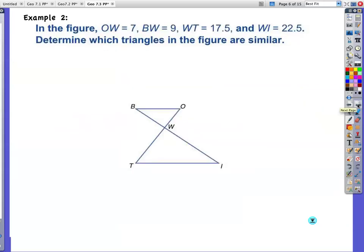Example two. In the figure, OW is seven. So I'm going to mark that right in there. BW is nine. WT is 17.5. And WI is 22.5. Determine which triangles in the figure are similar. Well, there's only two triangles in here. So we just need to determine if they're similar. So let's check.